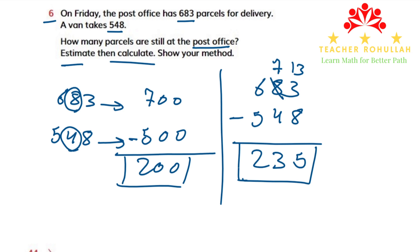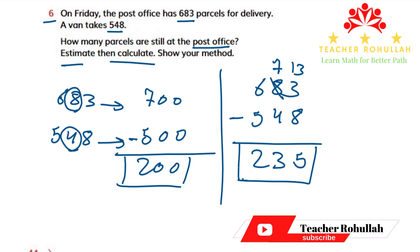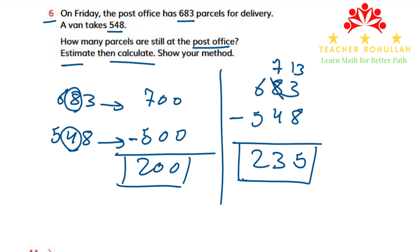We are done with all questions of exercise 3-2, which are on pages 42, 43, and 44 of the Learner's Book of Cambridge Primary Mathematics. I hope it helps you understand how to estimate and how to find the difference between two or more numbers. Please make sure to subscribe to my channel, like the videos, and share with your friends. Have a nice time, and thank you so much.